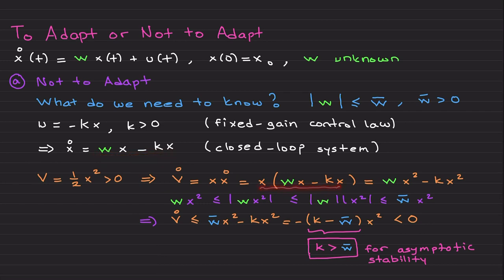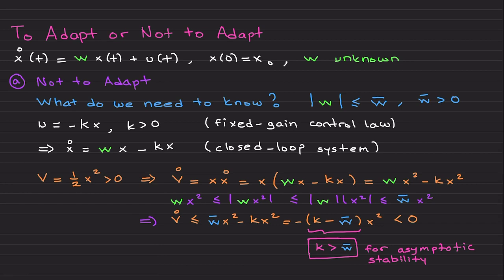Expanding these terms, the first term is wx² and the second is -kx². Now, I cannot choose k to be greater than w because in reality I don't know w. Think of w as an unknown mass — it may be different for different applications. It could be five kilograms or six kilograms; you don't know it. But you know that whatever happens it won't exceed 10 kilograms, so you need to work with its upper bound, not the actual w itself.